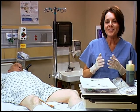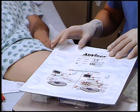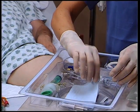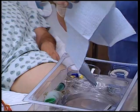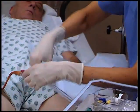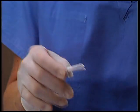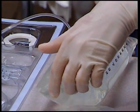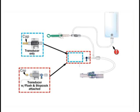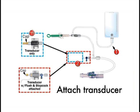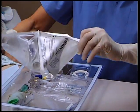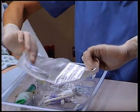The first steps can be done using clean gloves. Open the kit by removing the protective Tyvek lid. Remove the blue sterile drape and place it under the Foley connection. Take the saline spike from the kit, remove the protective spike cover, and spike a saline bag. Peel open your transducer kit and drop it onto the tray. Prep the Foley connection with antiseptic solution.